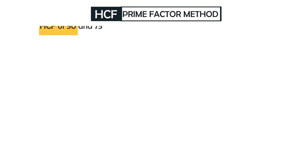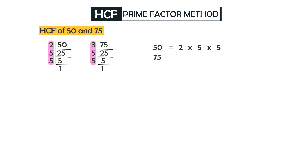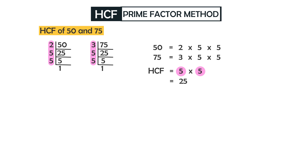Now let's find the HCF of 50 and 75 using the prime factor method. 50 = 2 × 5 × 5, and 75 = 3 × 5 × 5. The common prime factors are a pair of 5 and another pair of 5, so 5 × 5 = 25. The HCF of 50 and 75 is 25.